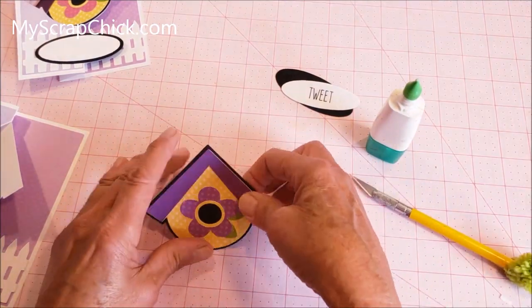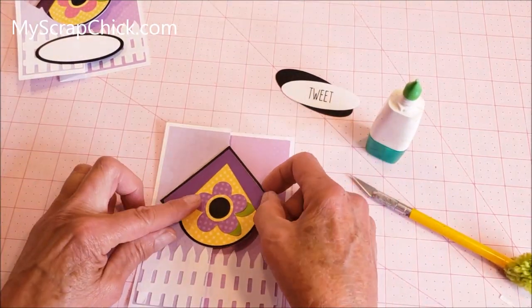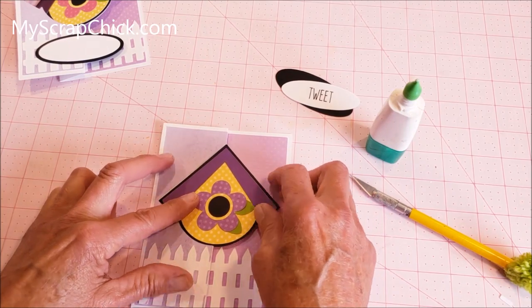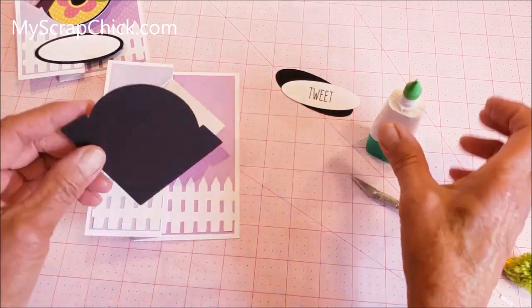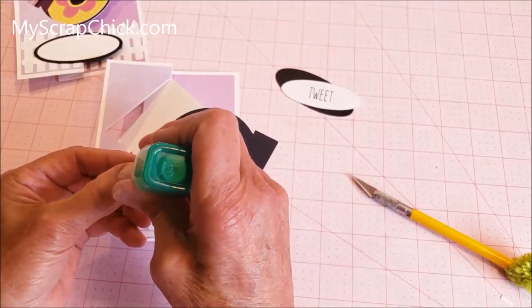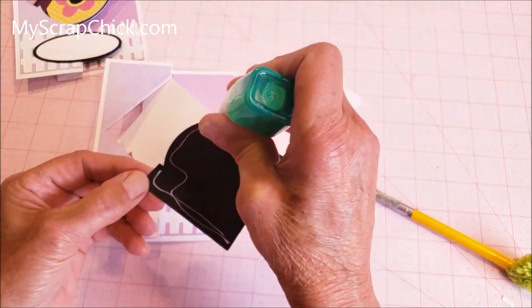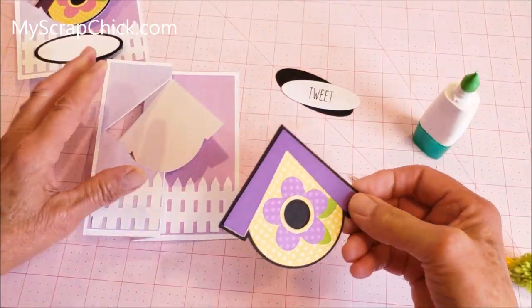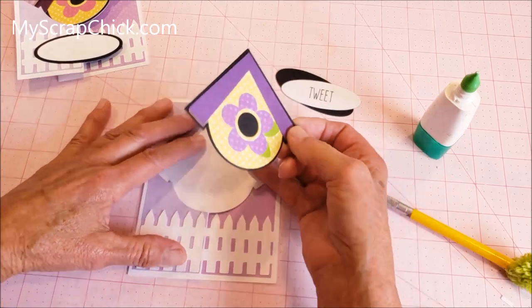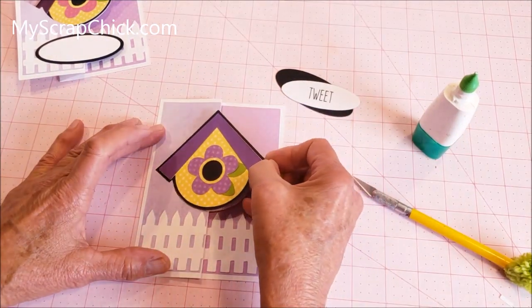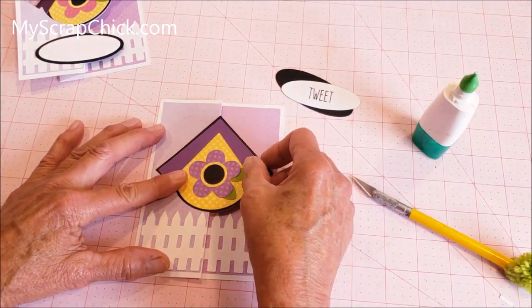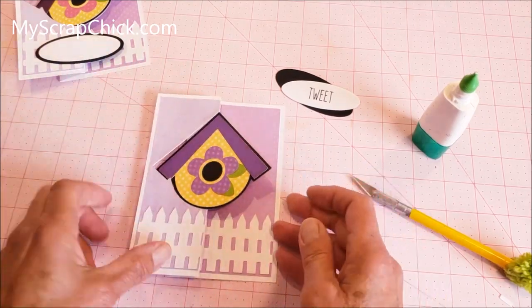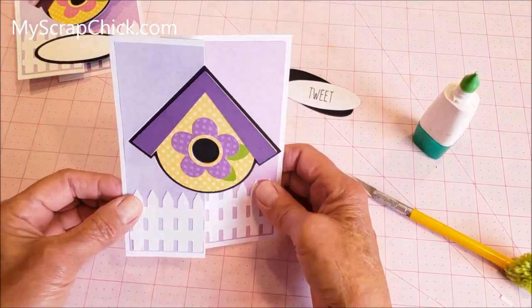Okay, there you have the birdhouse. One thing you could do, you can either glue it straight onto here or you could also pop dot it. But I'm going to be putting this in the mail, so I think just to make things easy and a nice flat mailer, I'm just going to go ahead and glue this to the card. I have the card folded the way it's going to be when it's folded shut, and then I just go in here and line up the birdhouse. Place that on there. And there you have it.